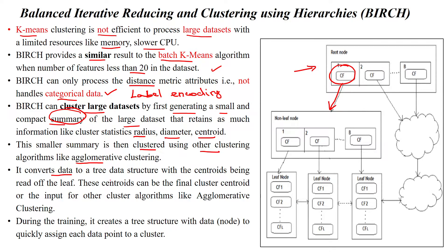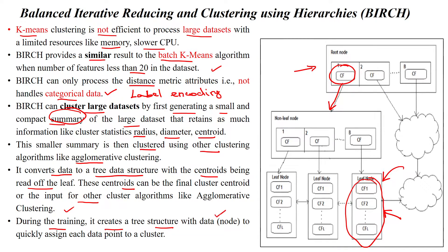BIRCH converts the data into a tree data structure with the centroids being read from the leaf nodes. When we apply hierarchical clustering, the centroid will be read from this set of leaf nodes. These centroids can be the final cluster centroid or input for other clustering algorithms. During the training phase, it creates a tree data structure with the given data points to quickly assign each data point to the cluster.